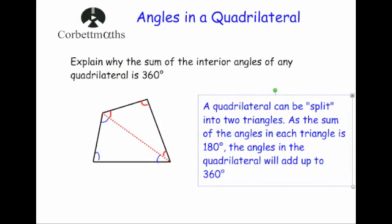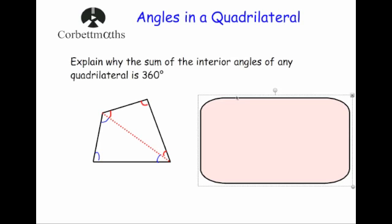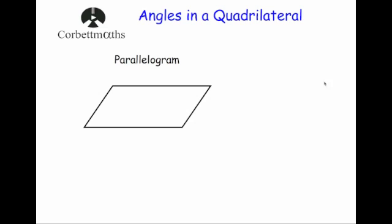So we've looked at how to answer a typical question when given three angles, and we've looked at why the angles add up to give you 360 degrees. Now we're going to look at some special quadrilaterals and some special facts about their angles. Here we've got a parallelogram — the top is parallel to the bottom and the left side is parallel to the right side.